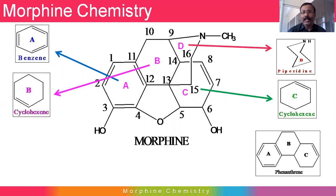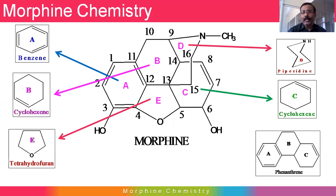Ring D is a heterocycle — it is a six-membered ring and contains nitrogen as a heteroatom. The ring is called piperidine. The nitrogen in the piperidine is tertiary in nature.